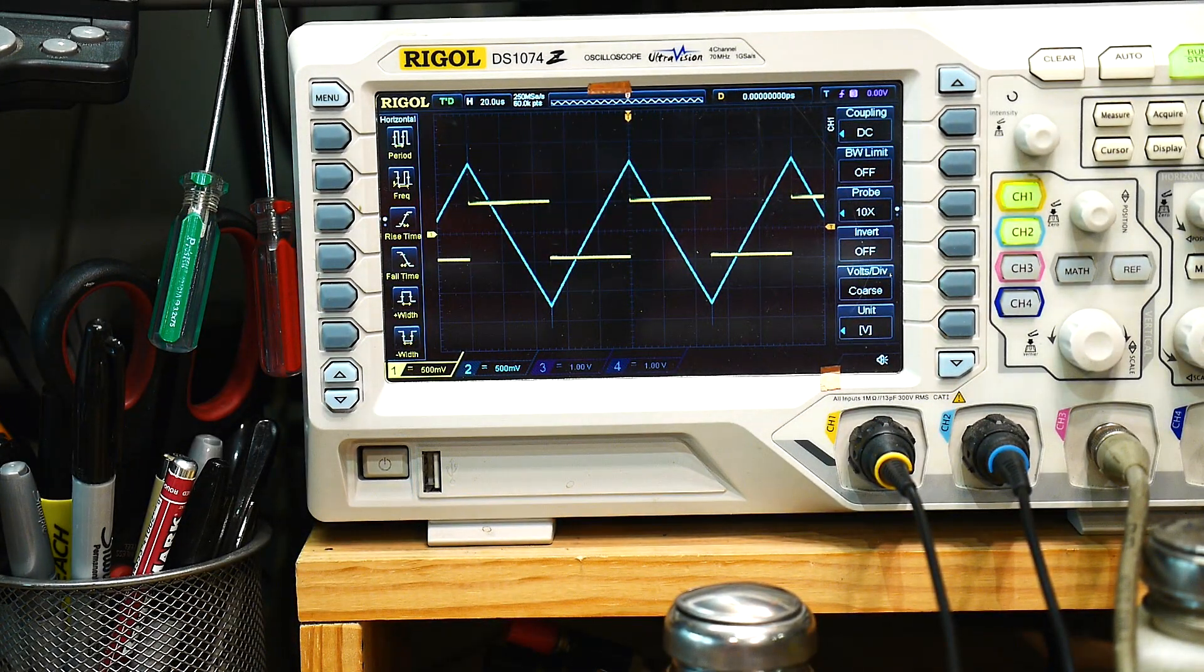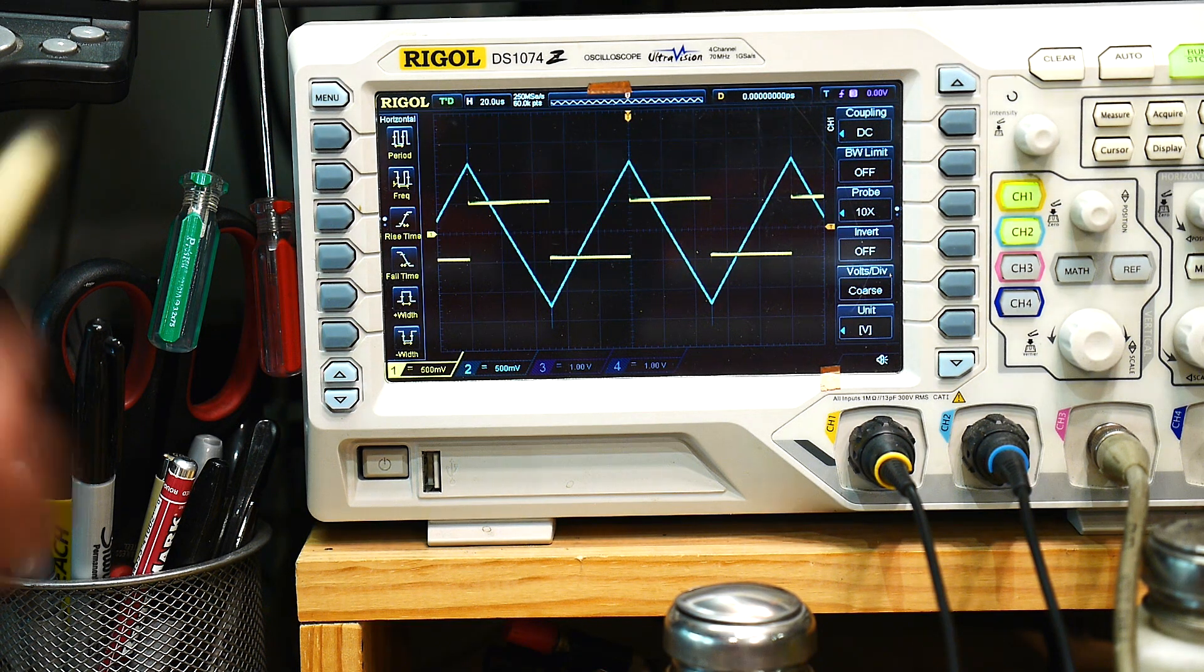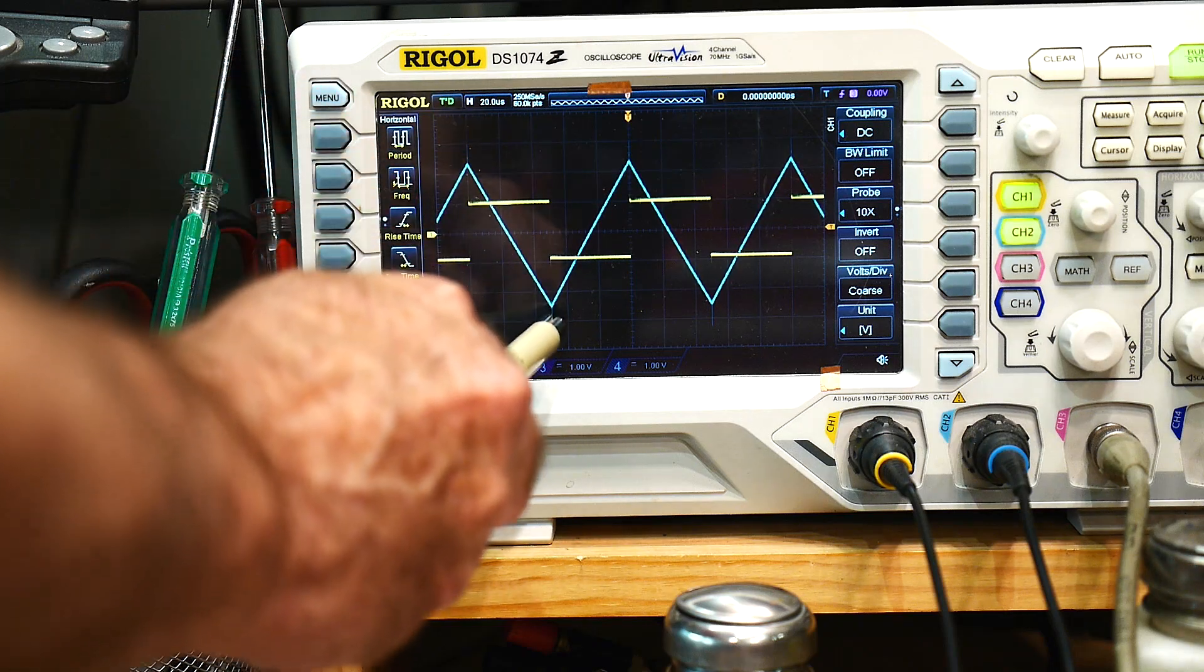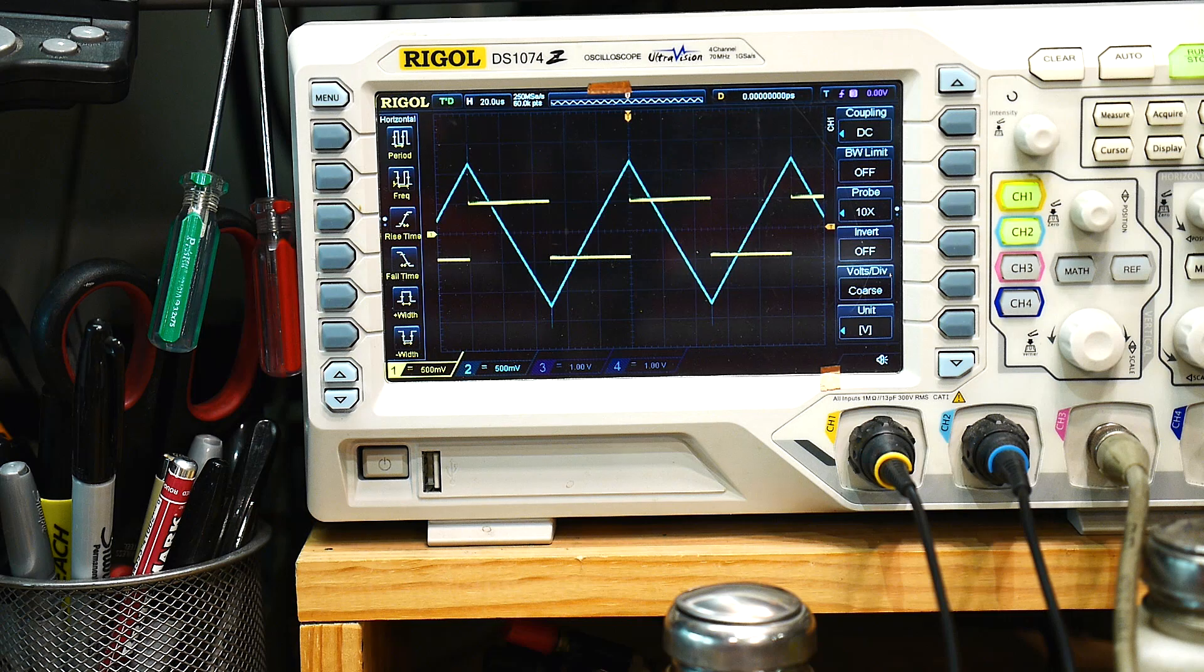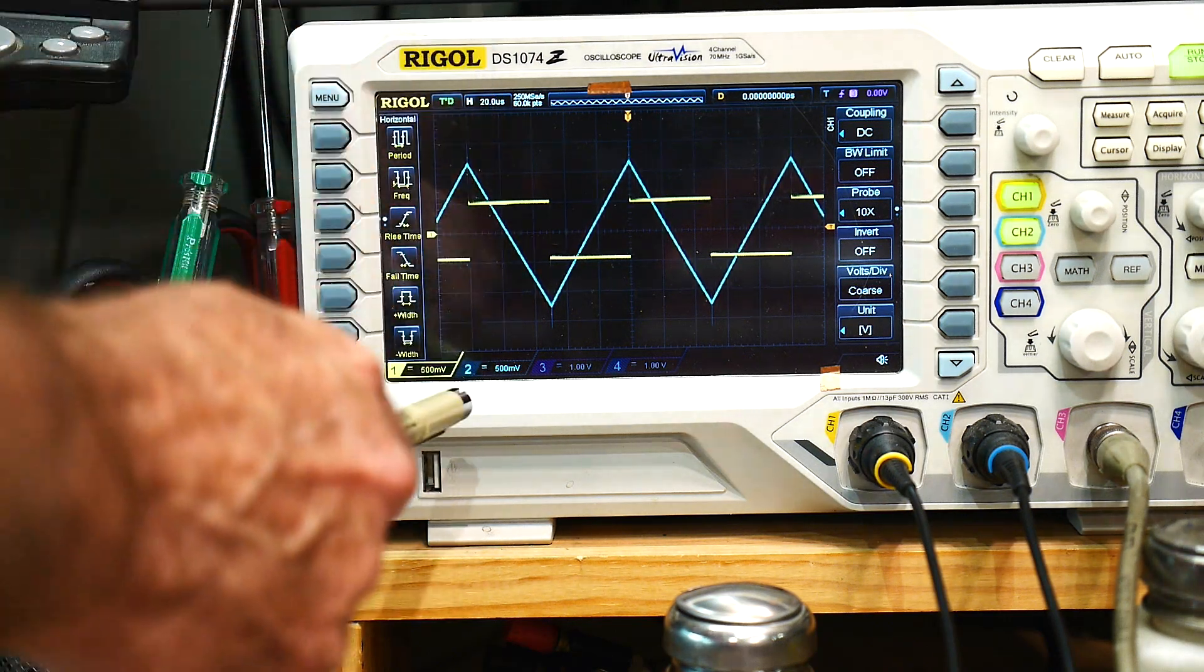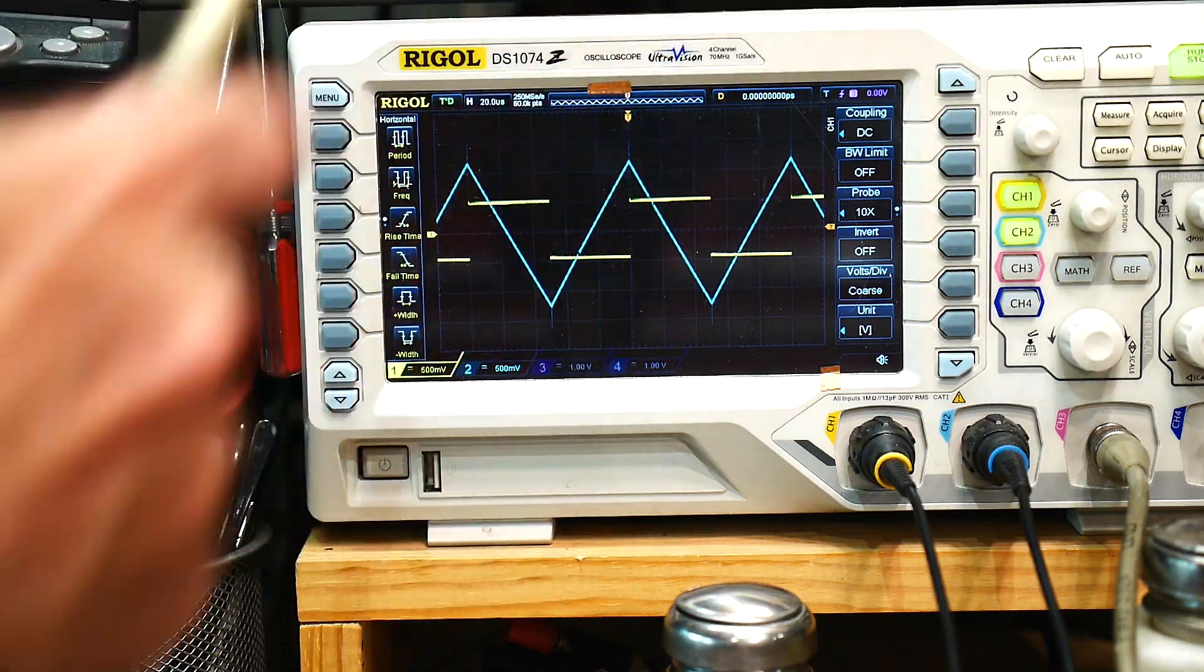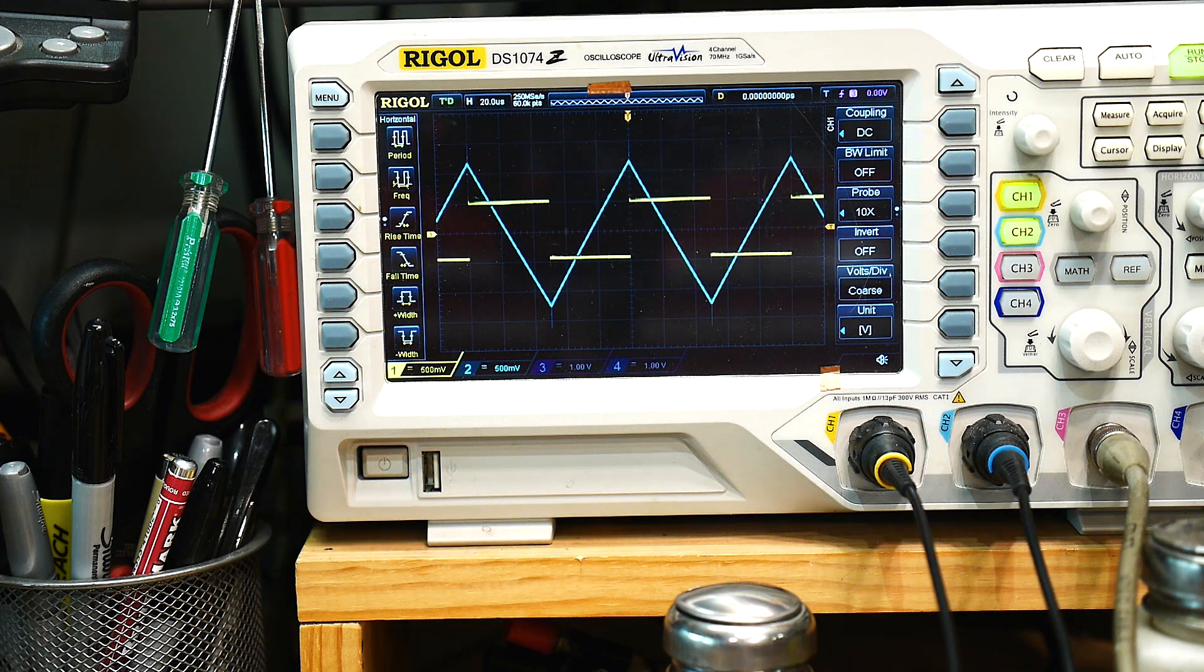So the yellow is the input. And so when it's in the high state, it's integrating downwards. And then when it's in the low state, it's integrating upwards. So my signal generator is putting in plus and minus voltages. So plus voltage and then a minus voltage and then a plus voltage and a minus voltage. That's what you get.